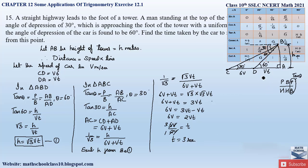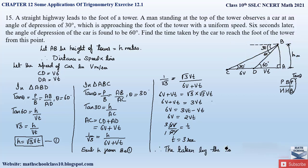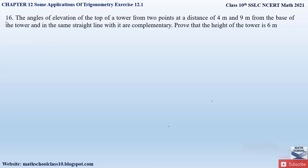So the time taken by the car to travel from point D to the foot of the tower A is 3 seconds. Therefore, the time taken by the car to reach the foot of the tower is 3 seconds. This is how we solve question number 15. If you have any doubts, comment below. In my next video I will solve question number 16 from exercise 12.1. Do like, subscribe, and hit the bell button to get the latest updates as I complete the whole syllabus for class 10th CBSE math.